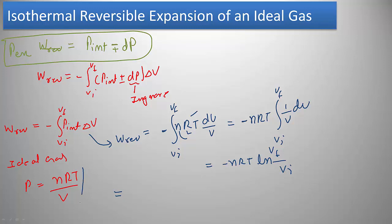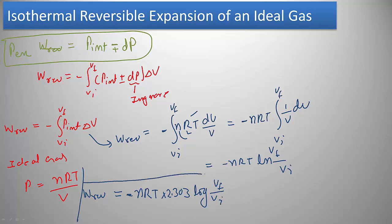Solving the integral gives reversible work equals minus NRT times ln(V final / V initial). Converting to log base 10, the reversible work for isothermal reversible expansion or compression of an ideal gas is: W reversible equals minus NRT times 2.303 times log(V final / V initial).